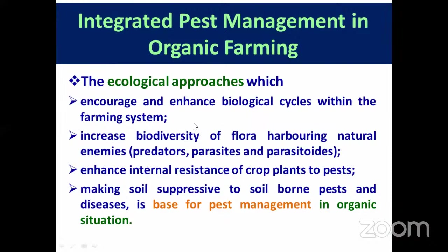A predator is like a lion — bigger than its host — and needs many hosts to complete its life cycle. A parasite is smaller than its host and may be external or internal, completing its life cycle across many hosts. Parasitoids are a type of parasite that complete their whole life cycle within a single host. That is the key difference between parasites and parasitoids.